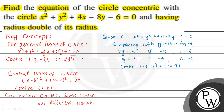The radius of circle C1 is r = √(g² + f² - c). With g = 2, f = -4, and c = -6, we get r = √(4 + 16 + 6) = √26. So the radius of C1 is √26.